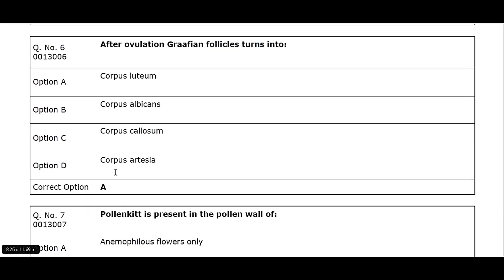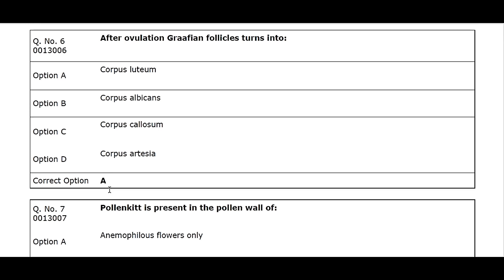Q6. After ovulation, the Graafian follicle turns into: Option A. Corpus luteum. Option B. Corpus albicans. Option C. Corpus callosum. Option D. Corpus artesia. Correct option A.